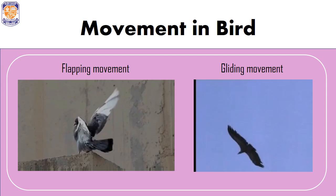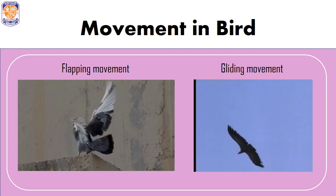Birds that are able to fly also have a streamlined body shape which helps them cut through the air. Birds show two types of flight: flapping movement or gliding movement.